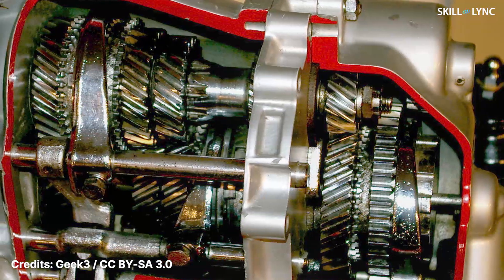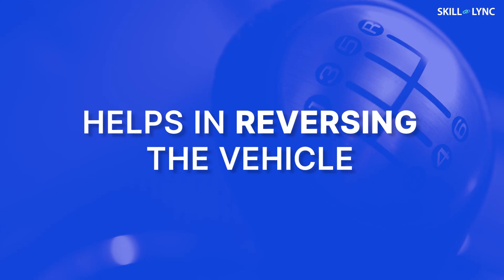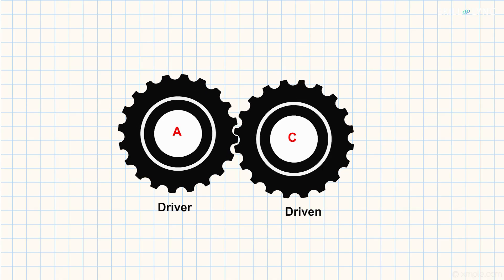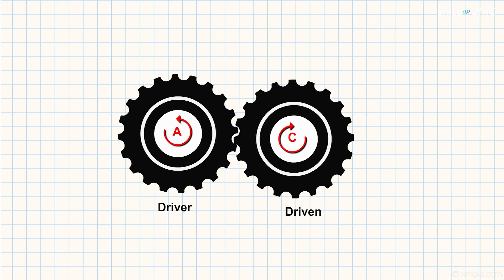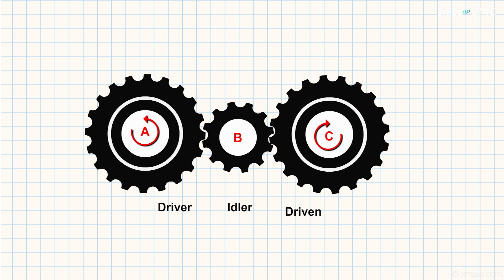To achieve this, a gearbox contains meshing gears of different sizes for providing different speeds. Other than varying the speed, the gearbox helps in making the vehicle move in reverse direction as well. In a gear transmission, the output gear rotates in the opposite direction to that of the input shaft. In order to change the direction of transmission, an additional gear called the idler gear is placed between the gears. This makes both the input and output shaft rotate in the same direction, changing the direction of the drive.